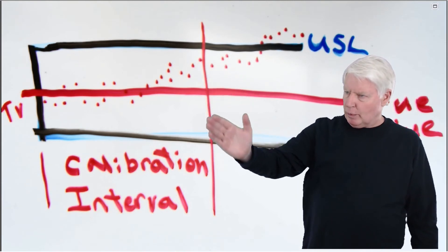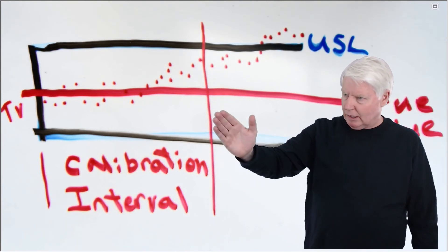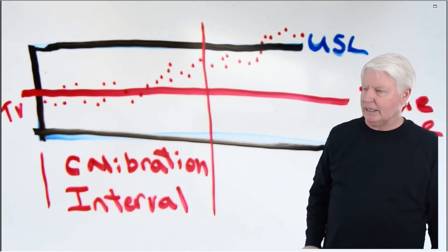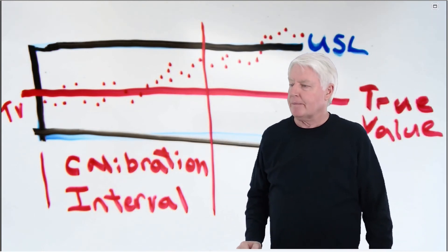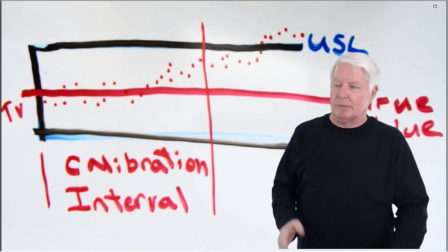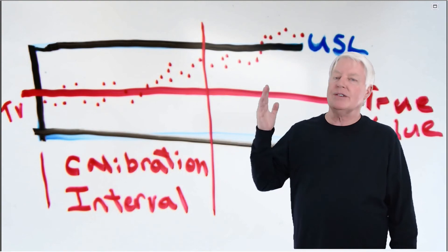But then after this, I'm going to recall this instrument, we're going to recalibrate it again, and we're going to do that every whatever this time period is, one year, for example. And that is called the calibration interval. That's why we need calibration intervals, is because of drift.